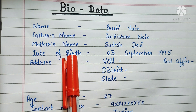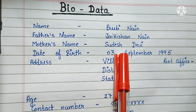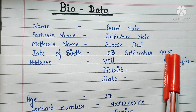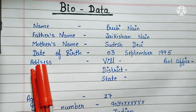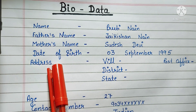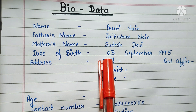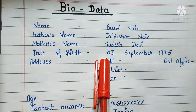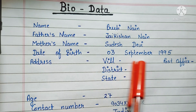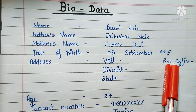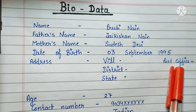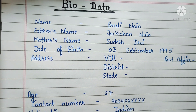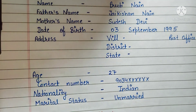Then you have to write the date of birth, like 3rd September 1995. After that you have to write the address. In address, you have to write your village, district, your state, and your post office.